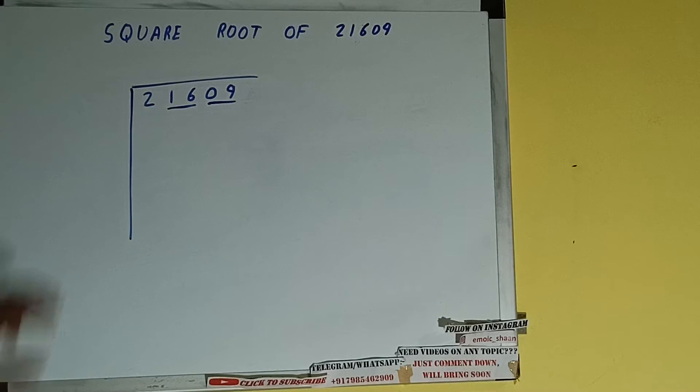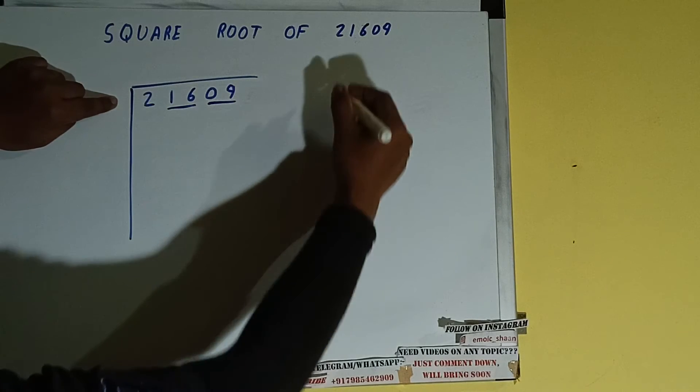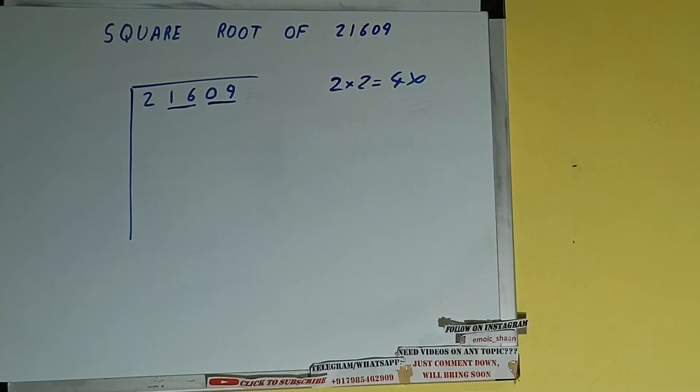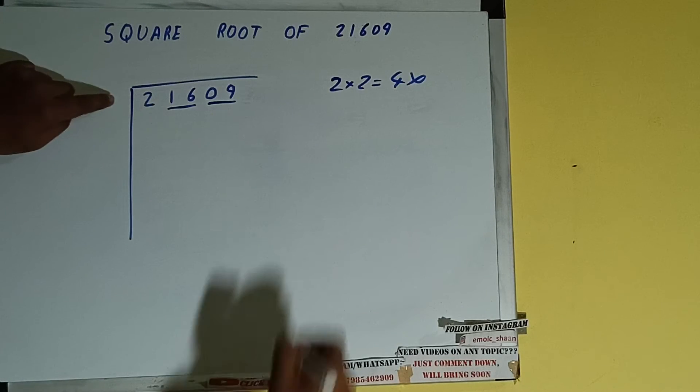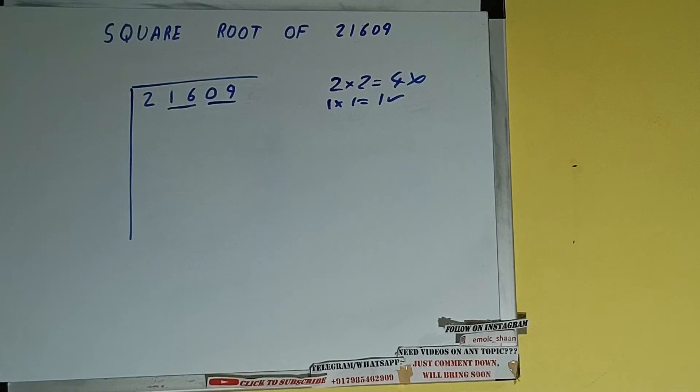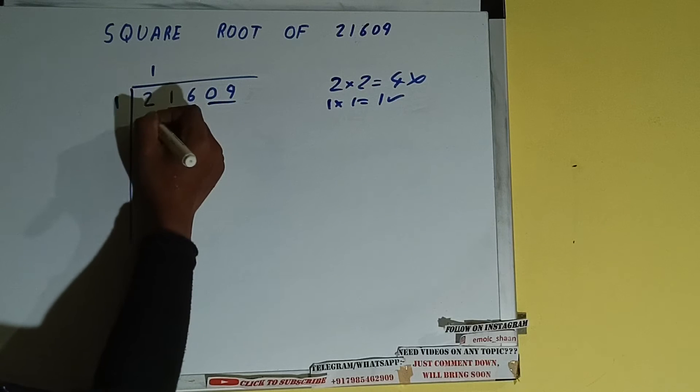The rule is whatever number we write here, we need to write here also. So if we write 2 here and 2 here, it will be 4, which is greater than 2, so we cannot use it. If we write 1 here and 1 here, it will be 1, which is good to use. So 1 here and 1 here.